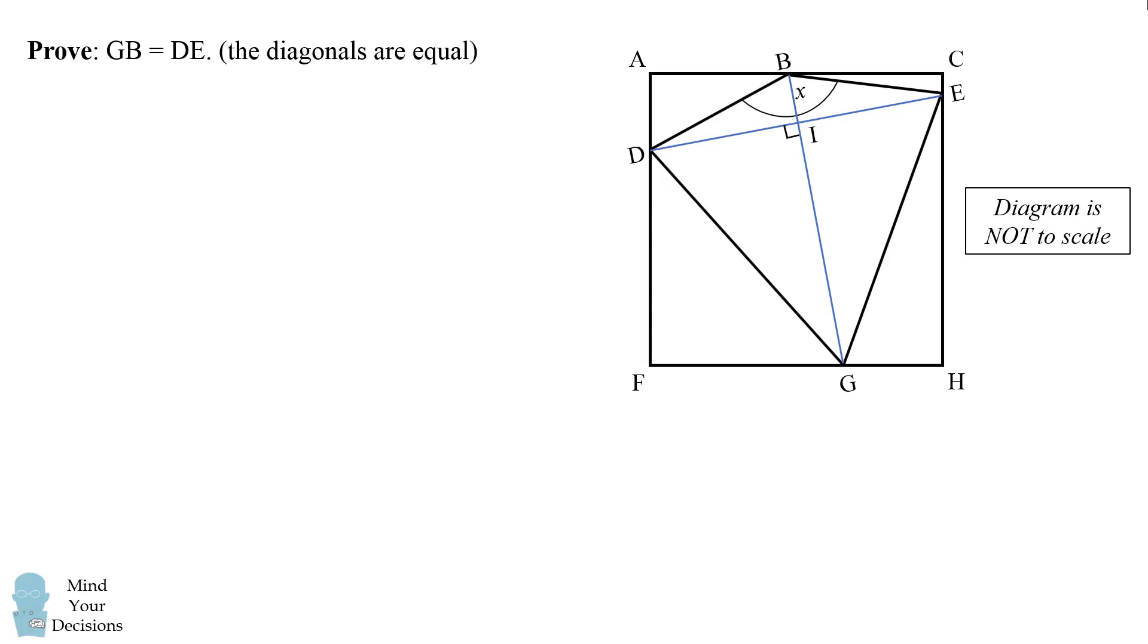So what we need to show is that GB equals DE. The diagonals are equal to each other. It doesn't matter that the diagonals would have to be the length of the square. It just matters that the diagonals are equal to each other. So how can we prove that?